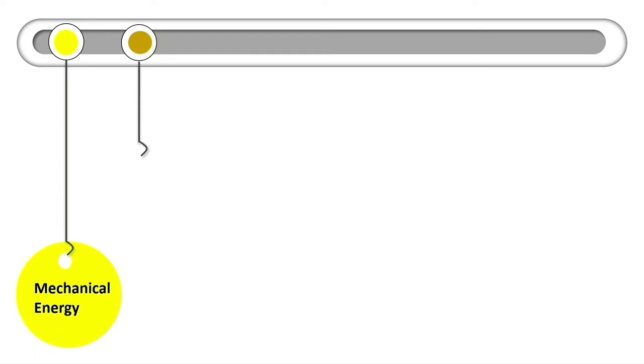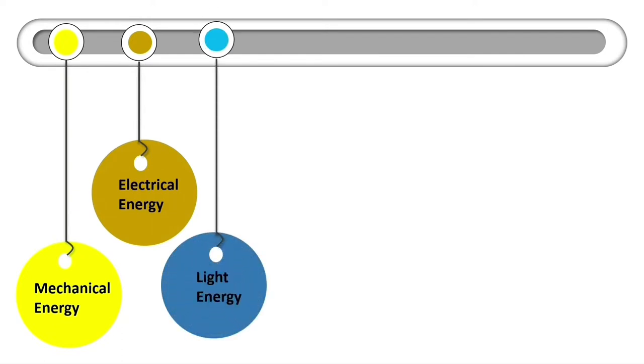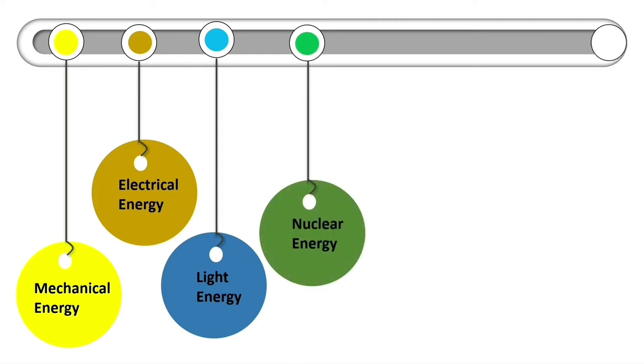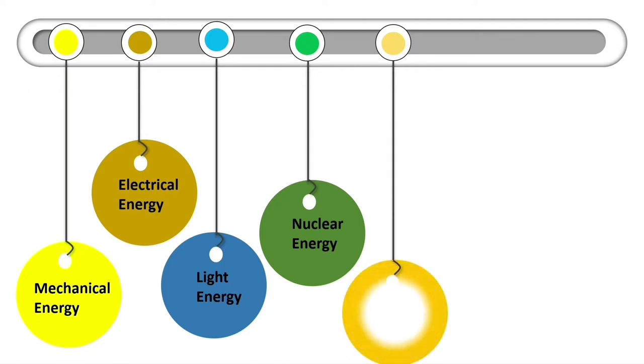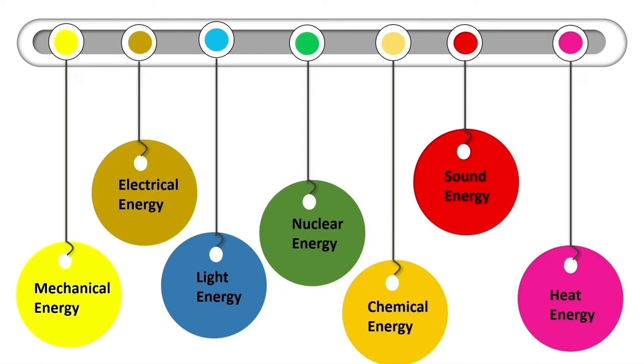In our previous class, we read two basic types of energy: the first type is called kinetic energy and the second type is called potential energy. But today we will study some of the basic forms of energy. The seven forms we will study are: mechanical energy, electrical energy, light energy, nuclear energy, chemical energy, sound energy, and heat energy. We will study their basic definitions, their sources, and the uses of all these forms of energy.